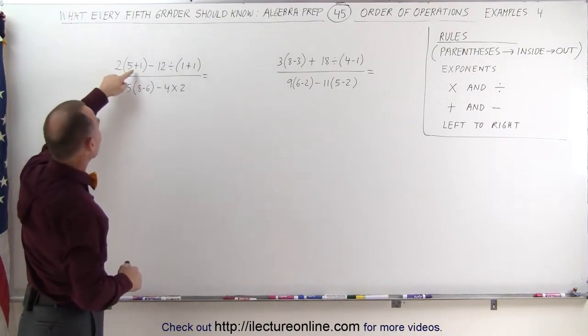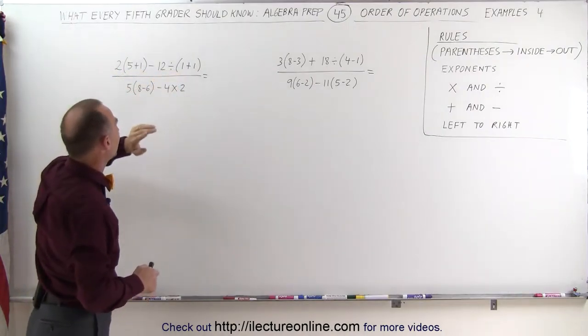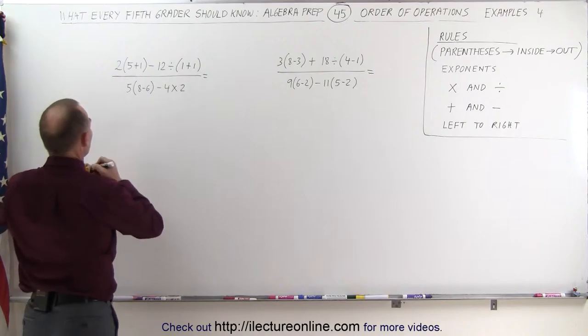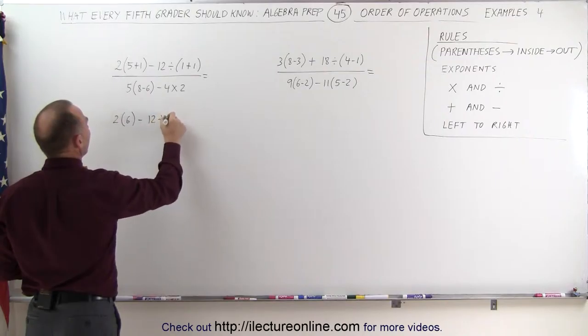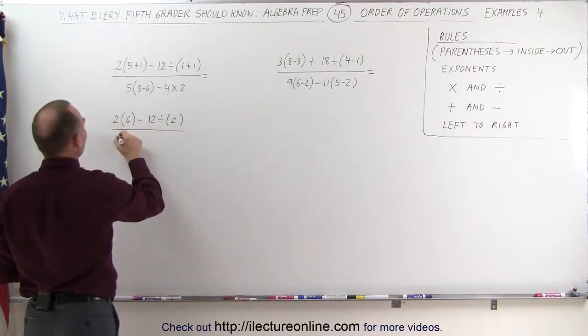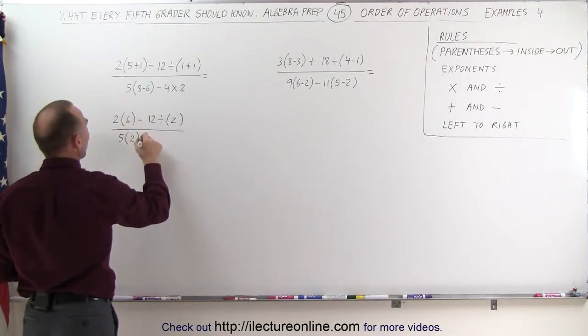In this case, we want to get rid of these parentheses. We're going to simplify those as follows: This becomes 2 times 5 plus 1 is 6, minus 12, divided by 1 plus 1 is 2, divided by 5 times 8 minus 6, which is 2, minus 4 times 2, which is 8.